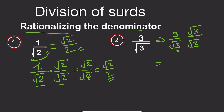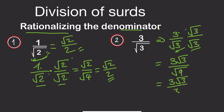So if we proceed, we are going to have root 3 times root 3. This gives us 3 root 3 divided by root 3 times root 3, which is root 9. Moving further, root 9 is 3, so we have 3 root 3 divided by 3. This 3 and that 3 will cancel, and our answer will be root 3.